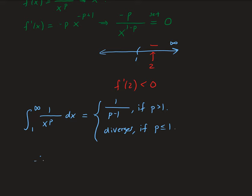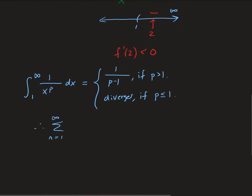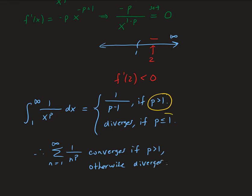Therefore, for the series of 1 over n to the p, this will converge if p is bigger than 1. Otherwise, it will diverge. That's the proof of the convergence of the p series — it converges if p is strictly bigger than 1, and otherwise it diverges.